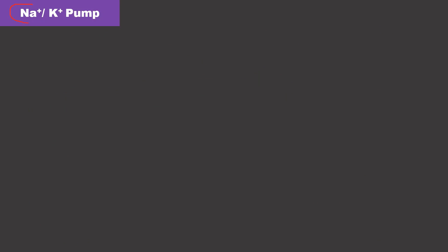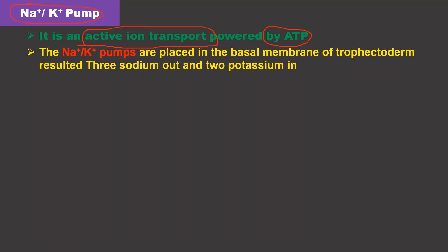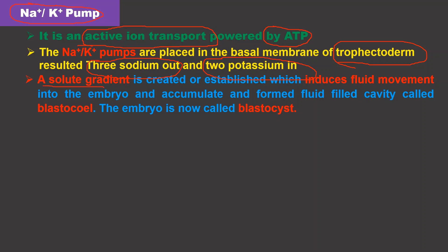Let us see the sodium-potassium pump and how it works in the embryo. This pump is an active ion transport pump and works by utilizing ATP energy. The sodium-potassium pump is placed in the basal membrane of the trophectoderm. This pump removes three sodium ions out and takes two potassium ions in. As a result, a solute gradient is created within the embryo, which induces fluid movement. Due to that solute gradient, the fluid moves in the embryo and accumulates to form a fluid-filled cavity — that is called the blastocyst. That is how the blastocyst is formed, and the whole structure is called the blastocyst.